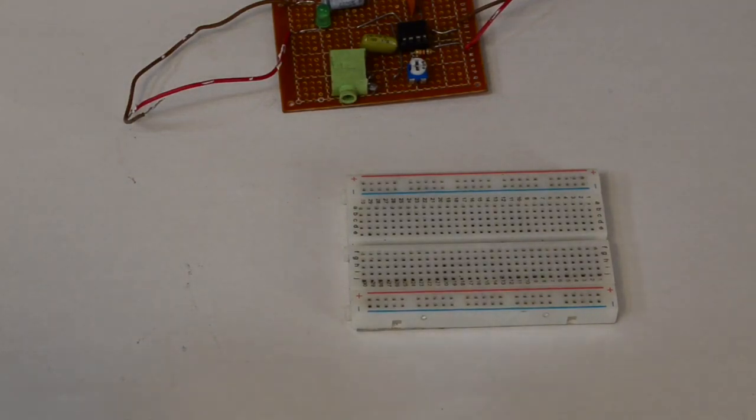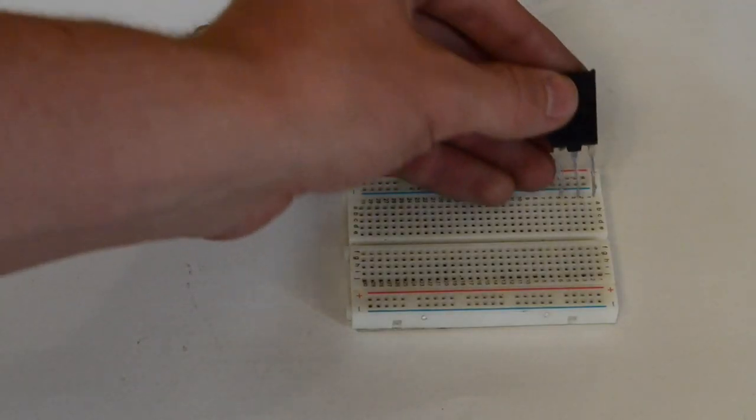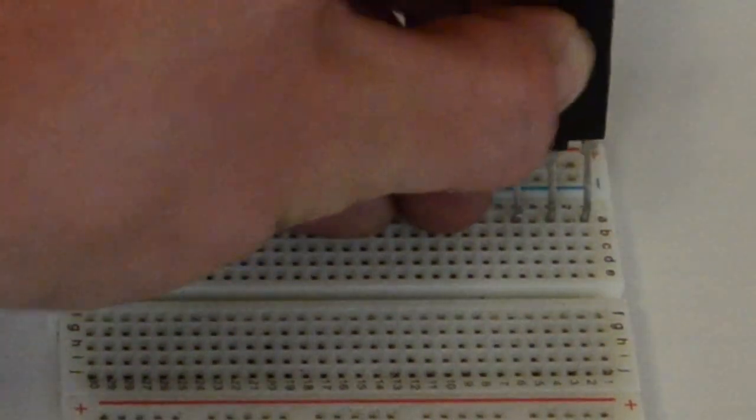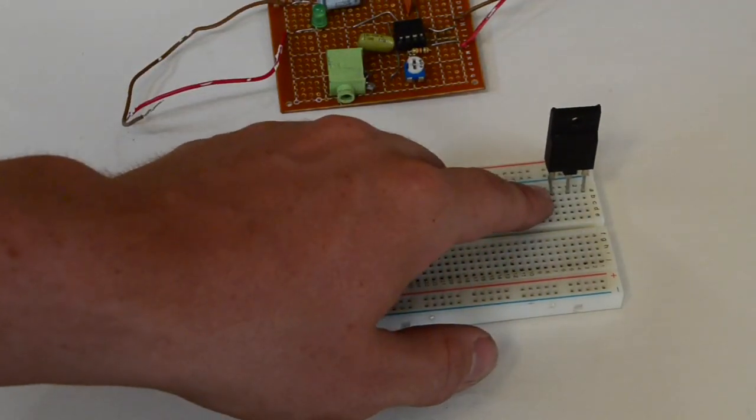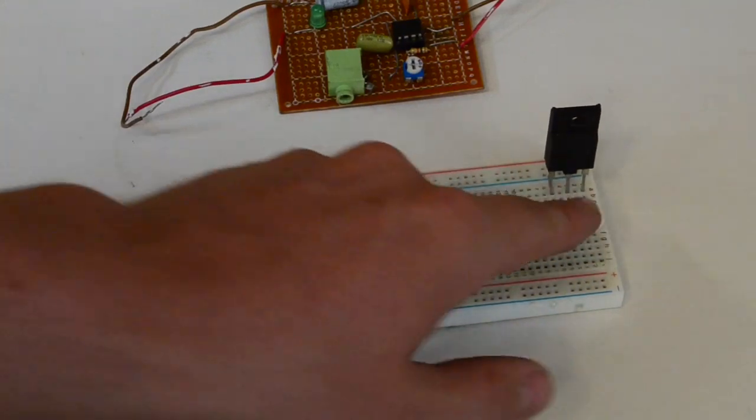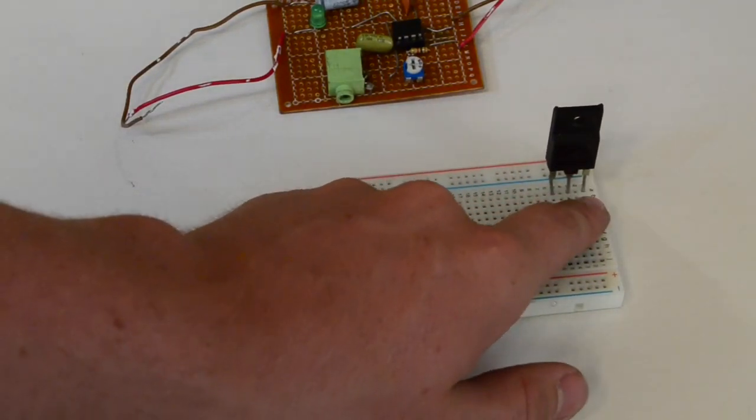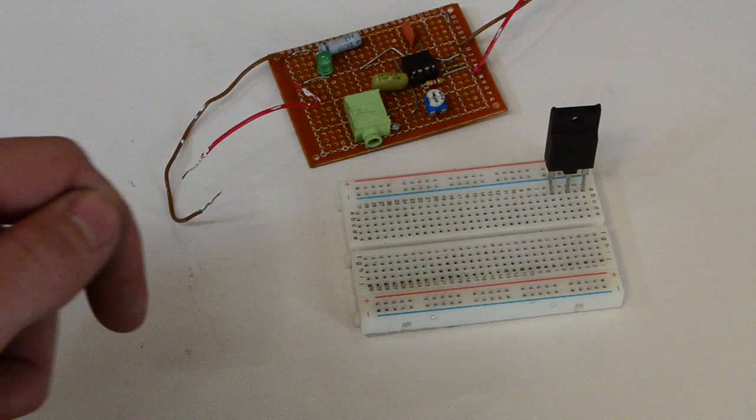Alright, so let's go ahead and prototype out the circuit. First, I'm going to insert this MOSFET into these three pins here. A transistor works as an electronic switch. Basically, when current is allowed to flow from the base to the emitter, it allows current to flow from the collector to the emitter. So you can use it as an amplifier.